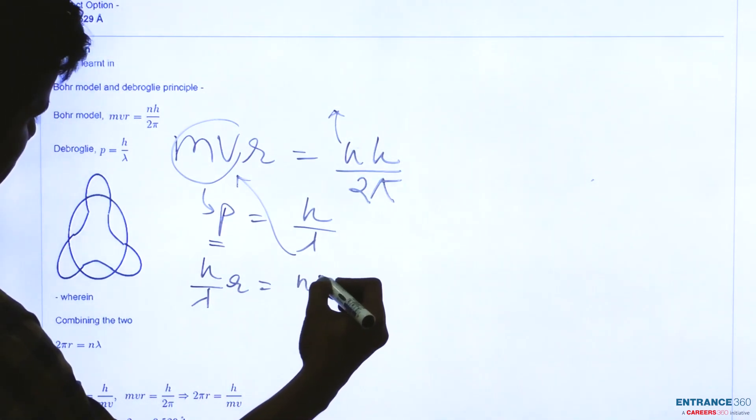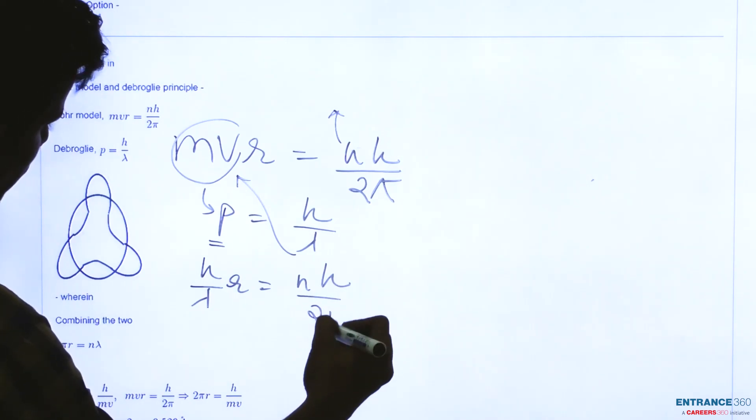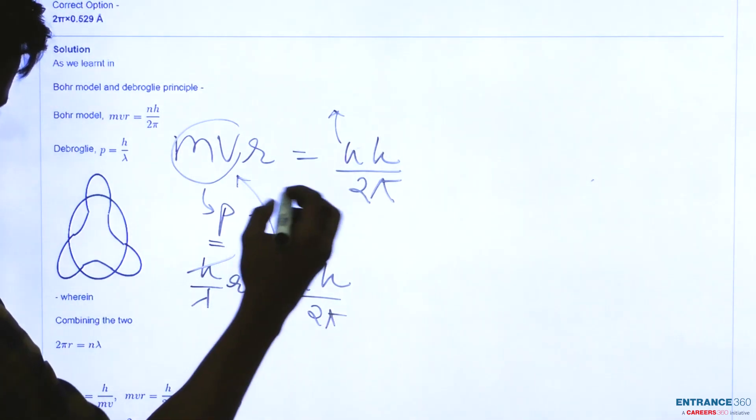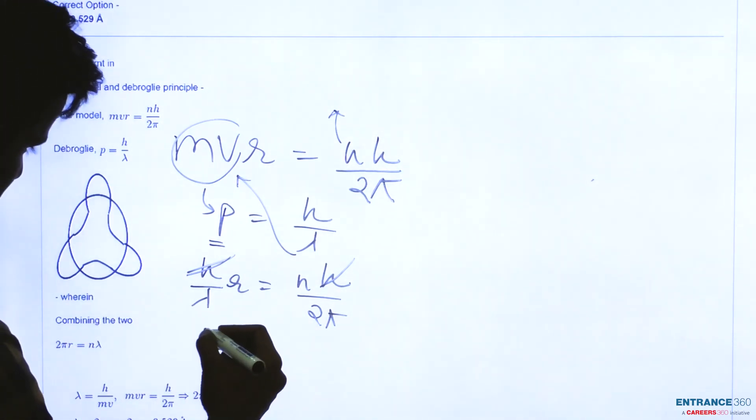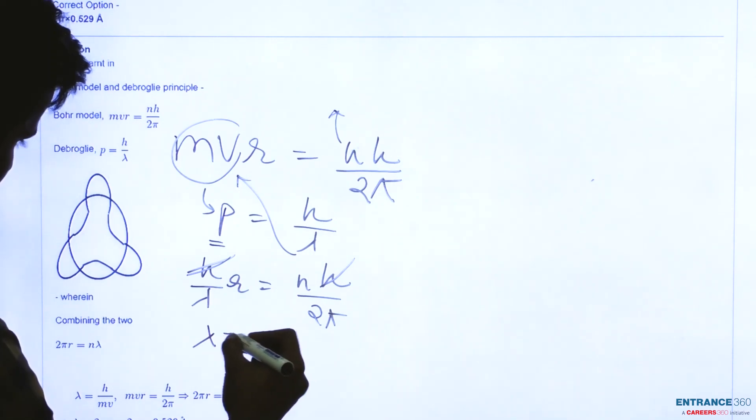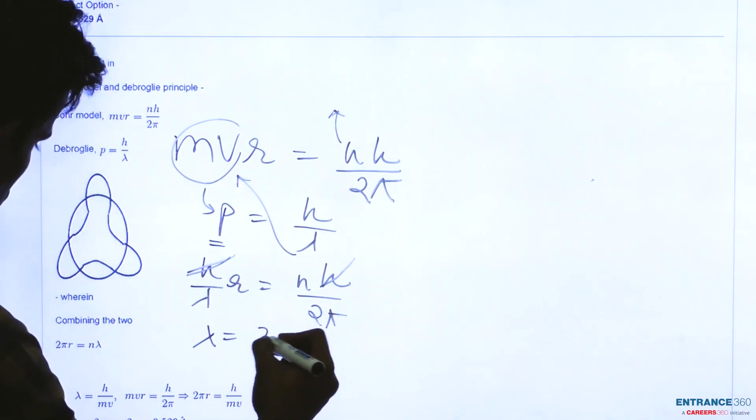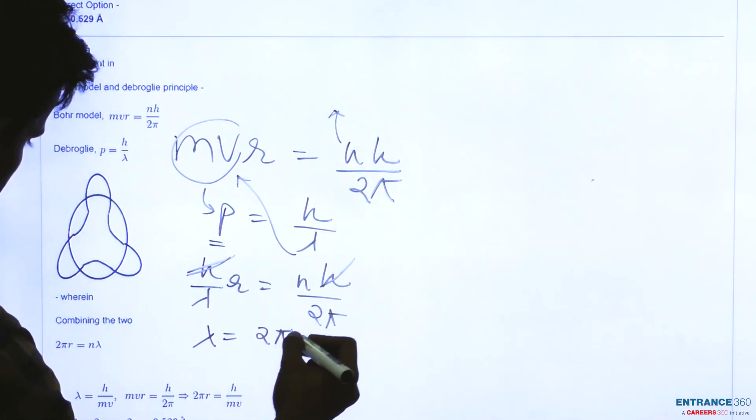So h can be cancelled from here and we will find what will be the value of λ which will be coming as λ is equal to 2πr upon n.